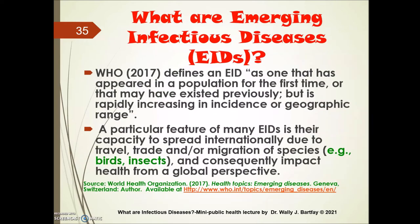What are emerging infectious diseases, abbreviated EIDs? The World Health Organization defines an EID as one that has appeared in a population for the first time, or that may have existed previously but is rapidly increasing in incidence or geographic range. A particular feature of many EIDs is their capacity to spread internationally due to travel, trade, or migration of species such as migratory birds and insects, consequently impacting health from a global perspective.